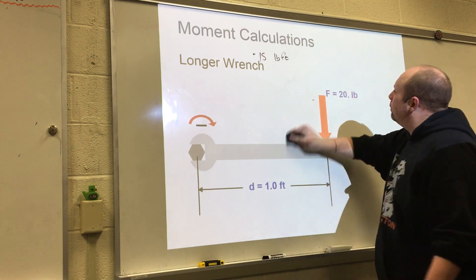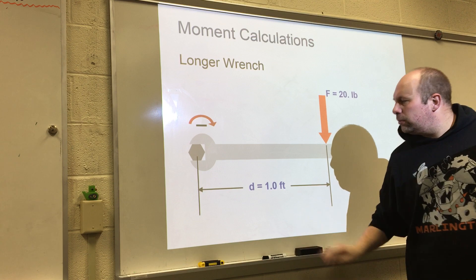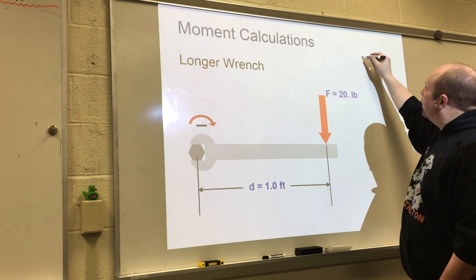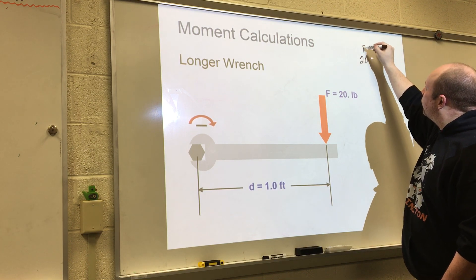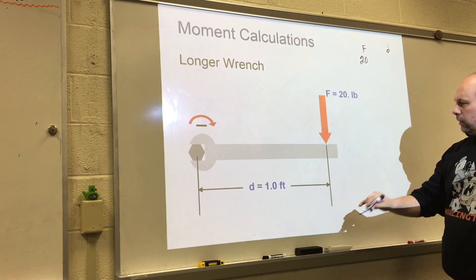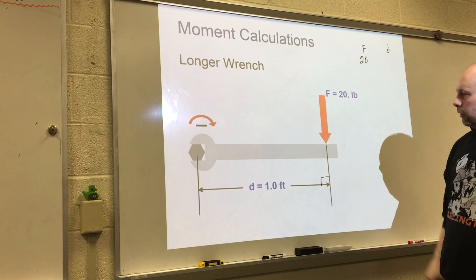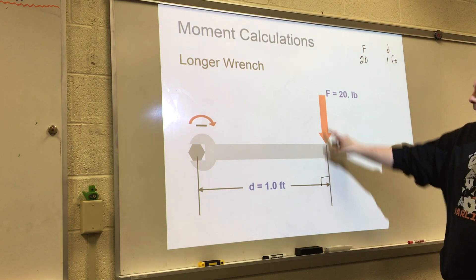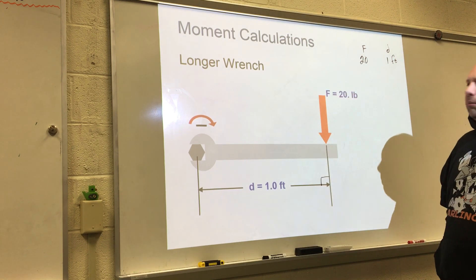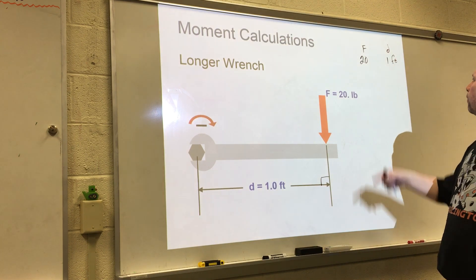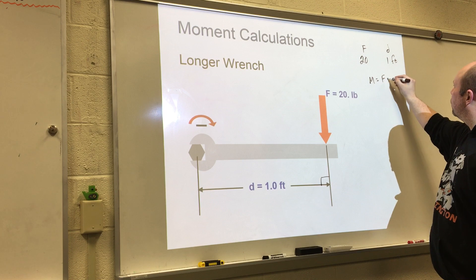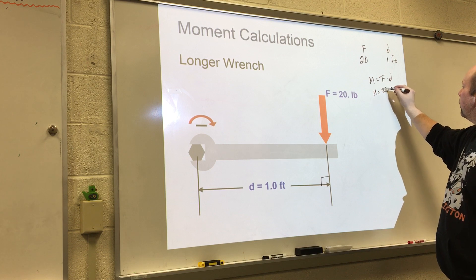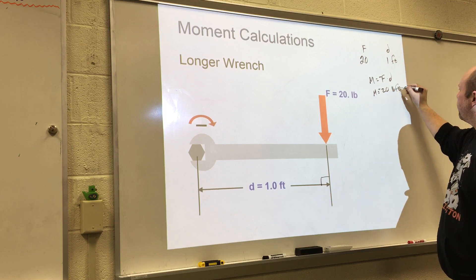Next example: a longer wrench, one foot long with 20 pounds applied. Force is 20, distance is 1 foot, and we check that the distance is perpendicular — it is. It's rotating clockwise, so it's negative. Moment equals force times distance: negative 20 pound-feet.